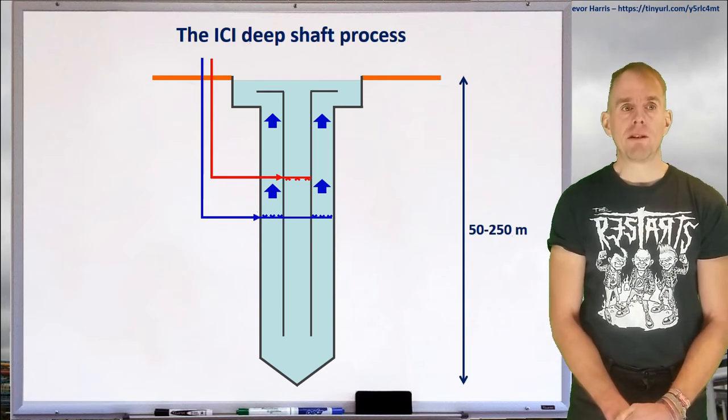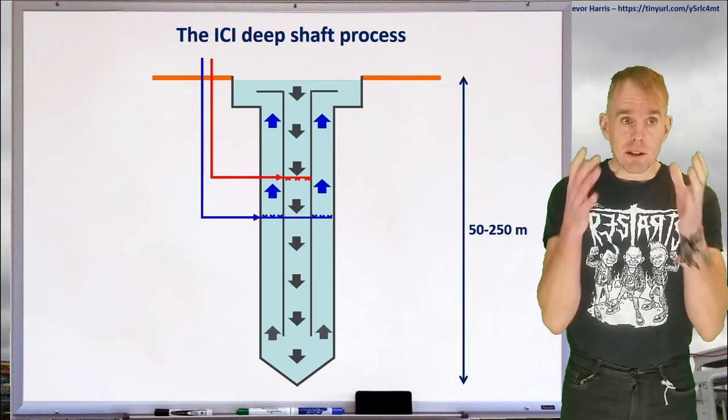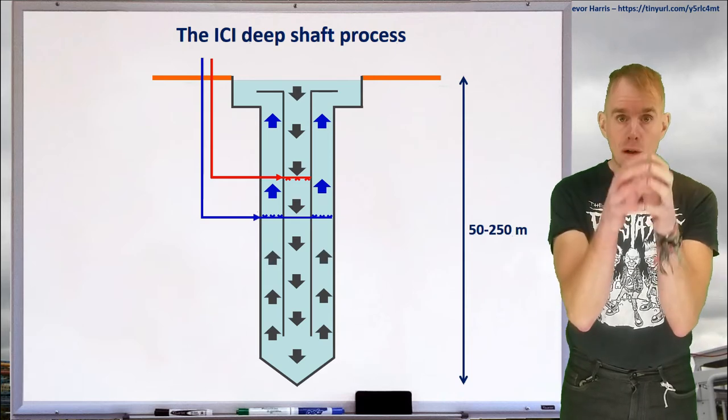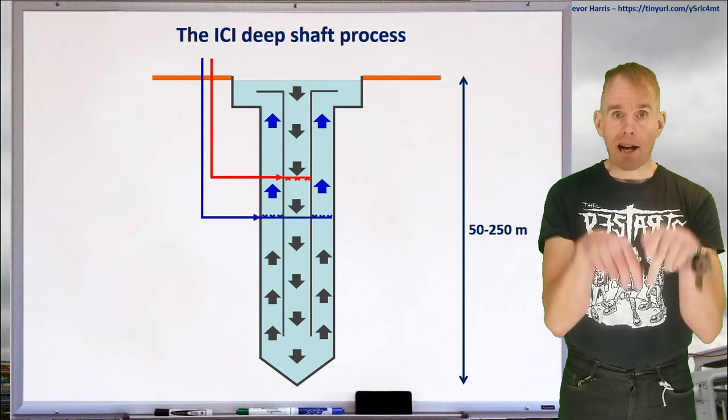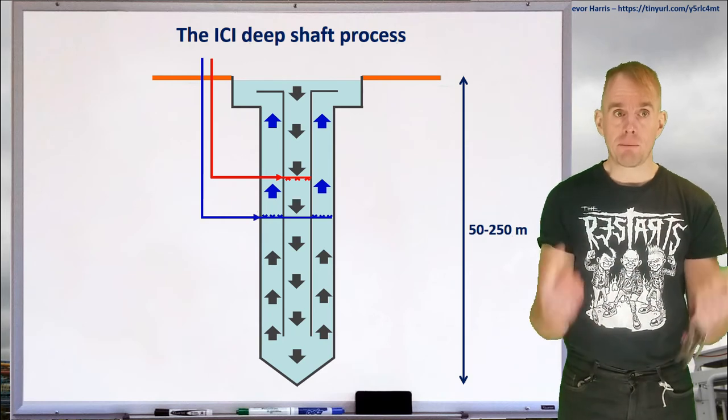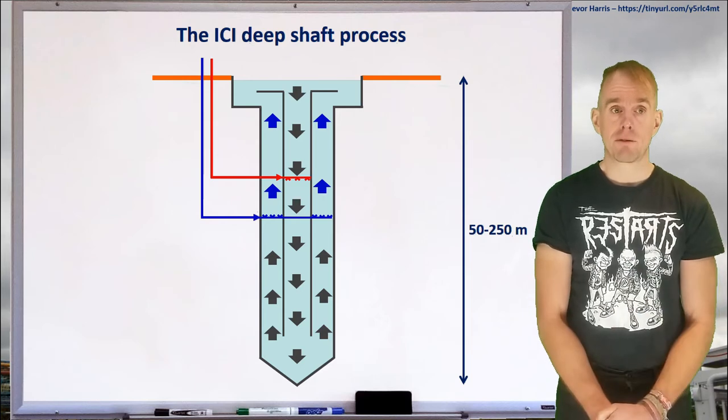So you're introducing air to introduce voidage to lower density to drive the flow. And so what happens is that the bubbles rise, the liquid starts to rise as well as it's pushed down by the higher density material in the centre of the bore. You get a down flow in the middle of the bore and an up flow in the outside of the bore. And a circulation pattern will establish over a set period of time.